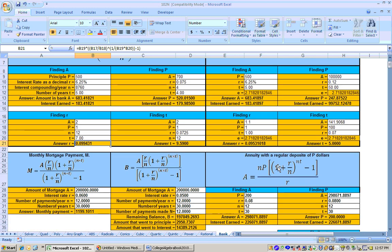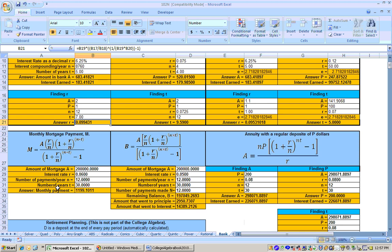Now, other things that are on this sheet that you might find interesting are here's where you can calculate a monthly mortgage payment. Here's where you can find out the remaining balance of a loan, and here's the annuity with a regular deposit of P dollars. In other words, you keep on adding money to this. This is a real useful formula, like you're making regular deposits to a retirement fund, and you could say how much money will you end up with if you put $200 in at 8% monthly for 30 years.